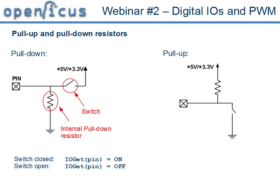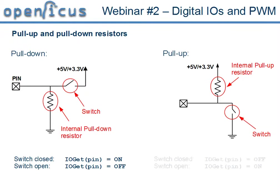For the pull-up we have a similar situation, but in this case the internal pull-up resistor ties the pin to 5V. So we can tie the switch to ground, and when the switch is closed the pin is tied to ground so it's OFF. But when the switch is open, the pin is tied to 5V by the internal pull-up resistor, so also in this case it is never floating.